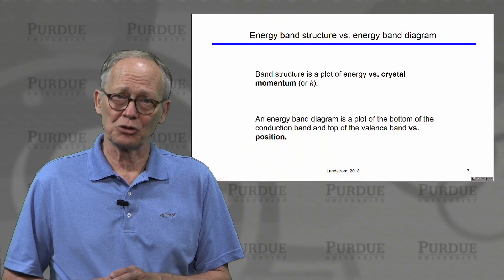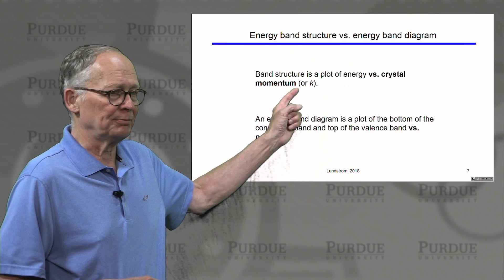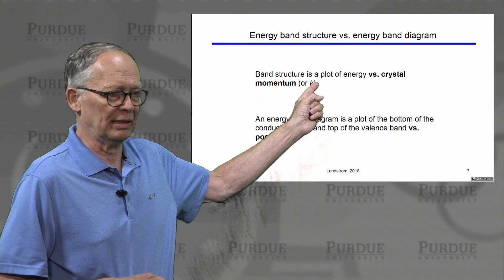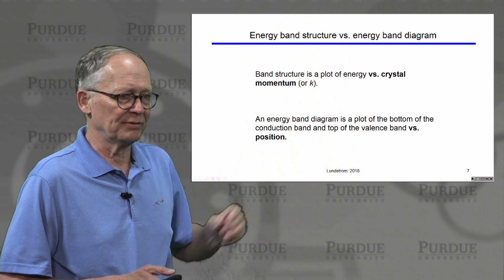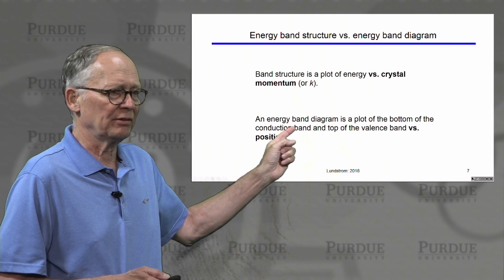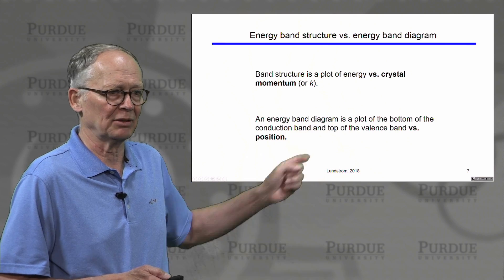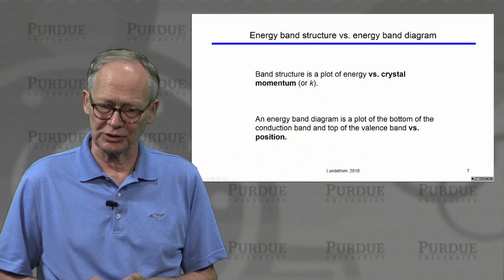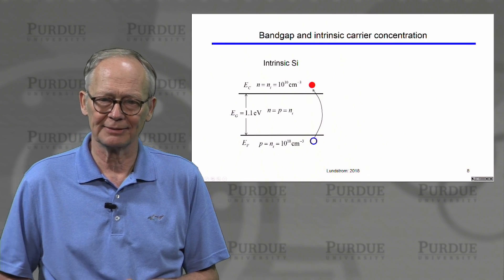We'll be talking about two types of plots. One is the band structure plot — energy versus crystal momentum. The other is the energy band diagram — energy versus position. We'll be using both of these.